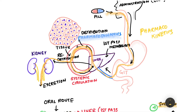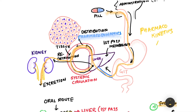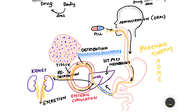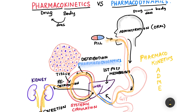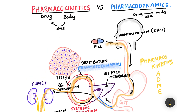Whenever we discuss any drug, we discuss its pharmacokinetics and its pharmacodynamics. When talking about pharmacokinetics, we cover it under four headings: absorption, distribution, metabolism, and excretion. In subsequent videos, we will delve into the details of pharmacokinetics, pharmacodynamics, and different drugs. I believe you have now clearly understood the difference between pharmacokinetics and pharmacodynamics.